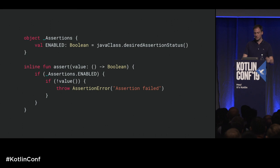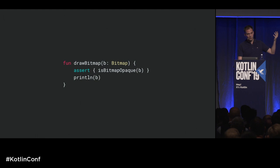You can fix that yourself. If you look at the Java Class object, there's a method called desiredAssertionStatus that tells you whether assertions are enabled at runtime. You can write your own assert function, and instead of taking a Boolean value, take a lambda that returns a Boolean. That way you defer execution of the assertion check and won't suffer the performance issues. We rewrite drawBitmap to pass a lambda, and we get the same performance as Java when assertions are disabled.